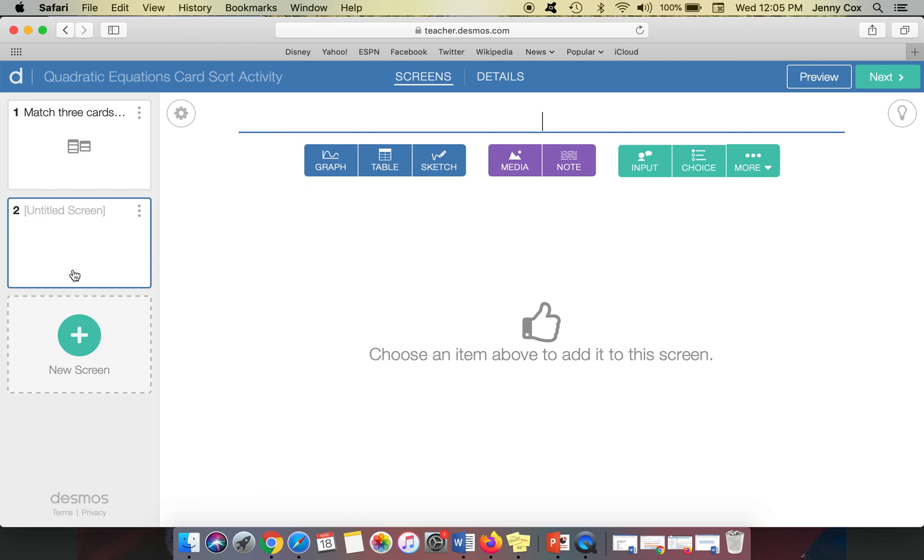So you can always create another card sort on the next slide. So you're basically creating like a slide deck, much like in PowerPoint. So that's how we would do the card sort activity, but let's talk about other things in activity builder.